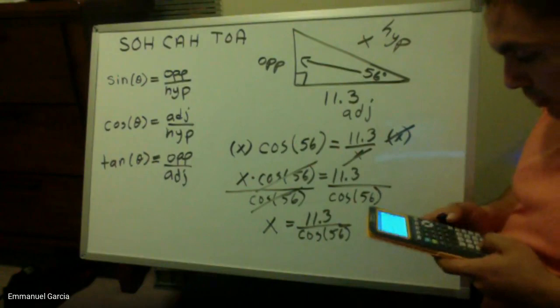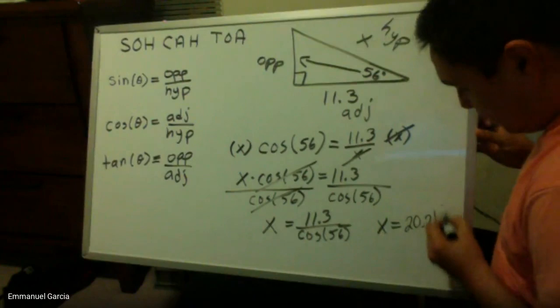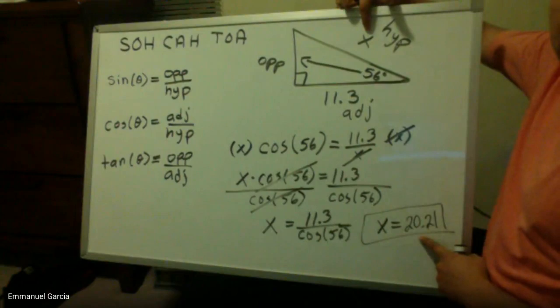So let me get my calculator and let me do the operation. 11.3 divided by cosine of 56. That equals 20.21.